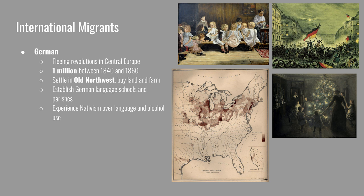Germans also experienced nativism over their continued use of their own language once they settled and their alcohol use. The pictures on the slide show other German cultural contributions that became part of larger American culture — those are the use of a Christmas tree and the use of a kindergarten, providing a school setting for kids in the 4–5 year age range.